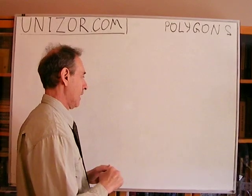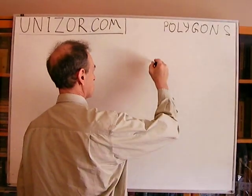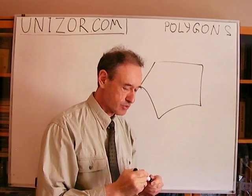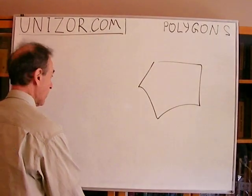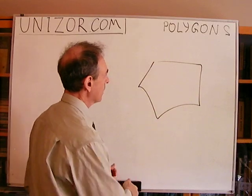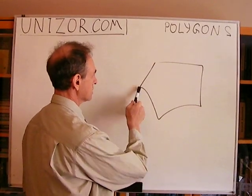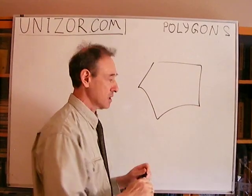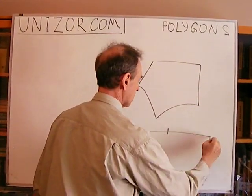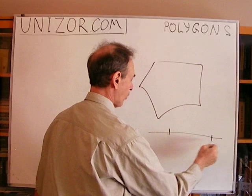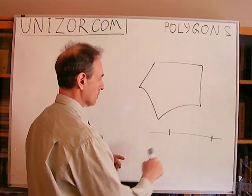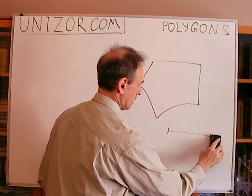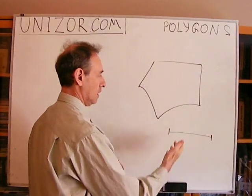Everybody knows more or less that a polygon is something like this, right? So let's try to define it in more rigorous terms. First of all, as we see, a polygon contains segments. Segments — we know what they are — these are just pieces of a straight line between two points, endpoints. Let's call the segment endpoints 'beginning' and 'end'.